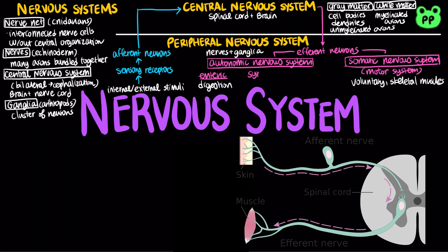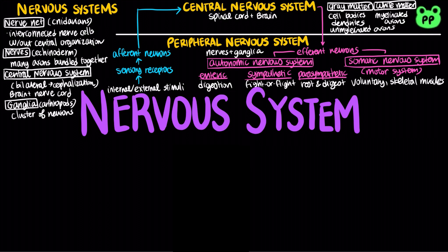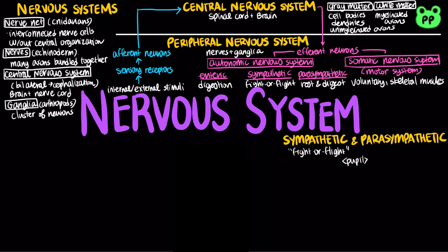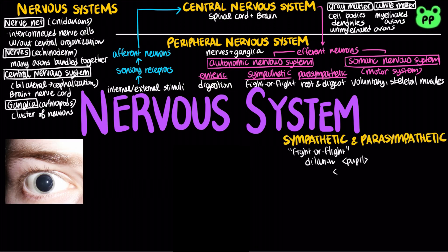The sympathetic and parasympathetic divisions have antagonistic effects on target organs. The sympathetic division correlates with the fight-or-flight response, whereas the parasympathetic division promotes a return to rest and digest.